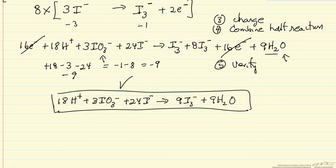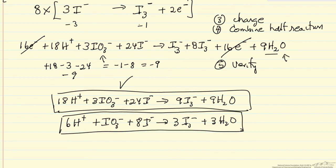I was a little too quick to write down that answer because I forgot to check. I can divide this entire equation by three. So I have six hydrogen ions plus IO3- plus eight I- goes to three I3- and three water. So we always want to have the smallest possible integers in a balanced equation. So this is the correct balanced equation.